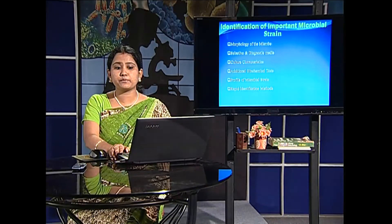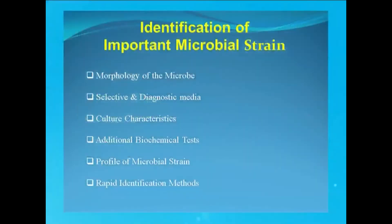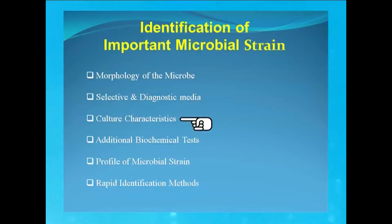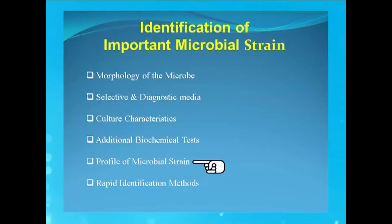After isolation, identification of the microbe is required. Identification of important microbes can be done by the following characteristics: by observing the morphology of the microbe, by the use of selective or diagnostic media, by observing the culture characteristics of the microbe, by performing additional biochemical tests, by observing the profile of the microbe, and by other methods known as rapid identification methods.